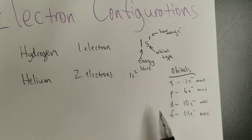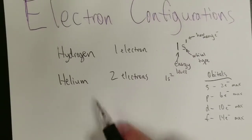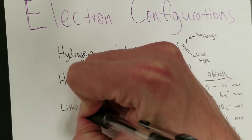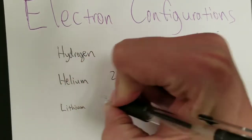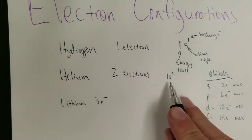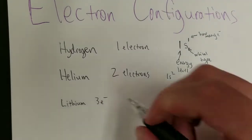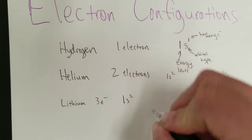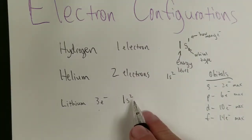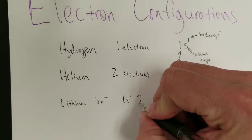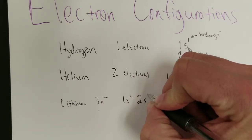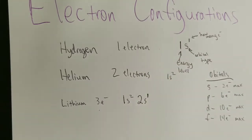What about lithium? Lithium has three electrons. You can't fit them all in 1s — the S orbital maxes at 2. So 1s2 accounts for two of the three electrons. Where does the next one go? It goes in the 2s orbital, so lithium is 1s2, 2s1.